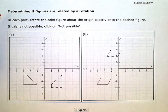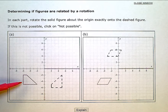Determining if figures are related by a rotation. In each part, rotate the solid figure about the origin exactly onto the dashed figure. If this is not possible, click on 'Not Possible.'